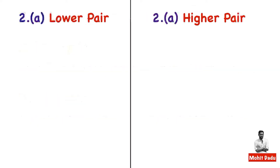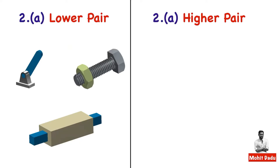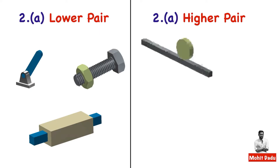The second major classification is based on the nature of contact, with two types: lower pair and higher pair. A lower pair forms a surface or area of contact between the links. For example, a shaft inserted in a hole and a sliding pair with a rectangular bar in a rectangular slot both have area contact and are lower pairs.